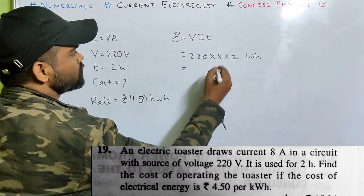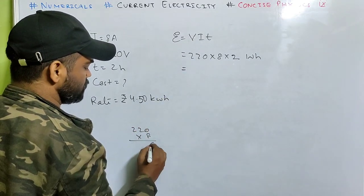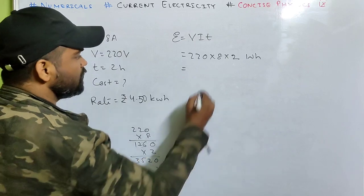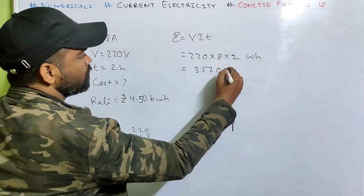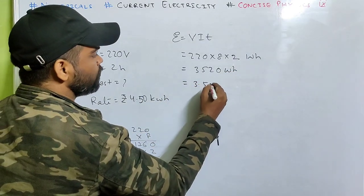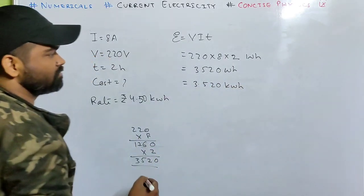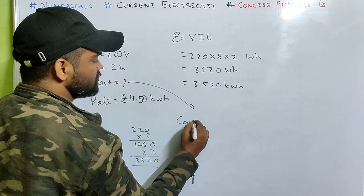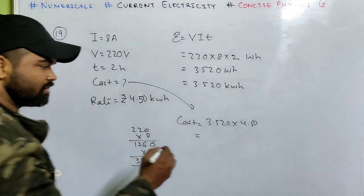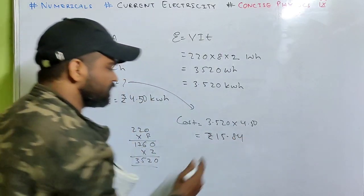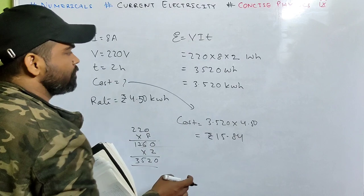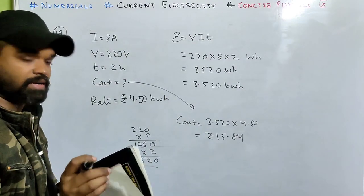Solving this: 220 multiplied by 8 is 1760, times 2 equals 3520 watt hour. Converting to kilowatt hour, divide by 1000, so 3.520 kilowatt hour. Then what is the cost? Very easy - the energy consumed multiplied by the rate at which they charge. So 3.520 times 4.50 equals 15.84 rupees. This was pretty easy.